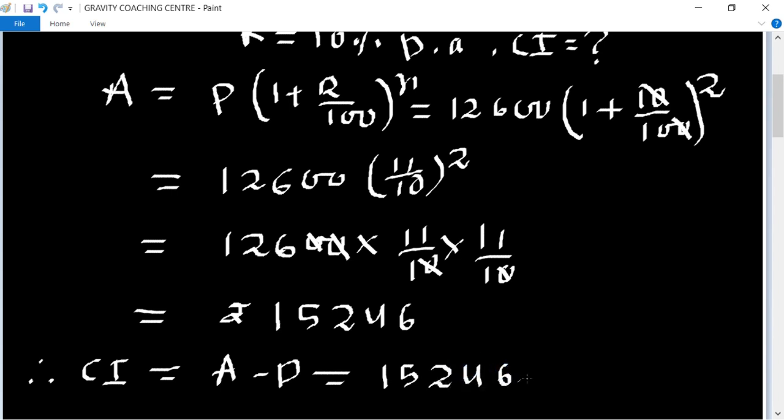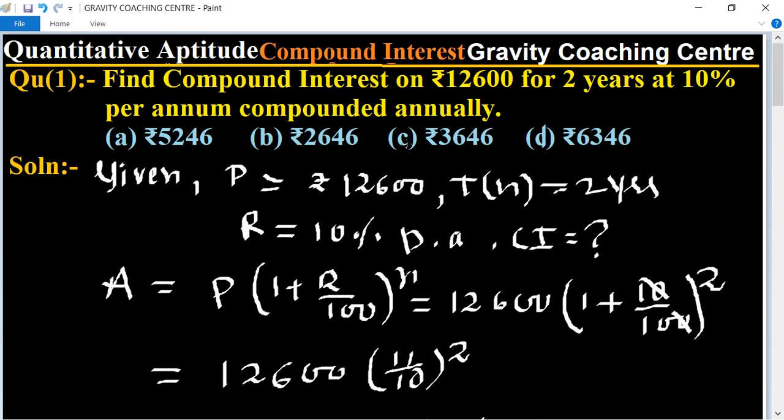15,246 minus principal equal to 12,600 equal to 2,646 which is the required answer. So 2,646, option B is the correct answer.